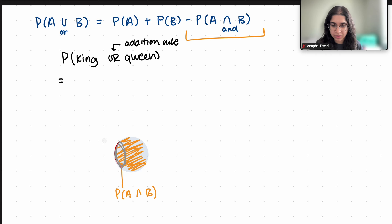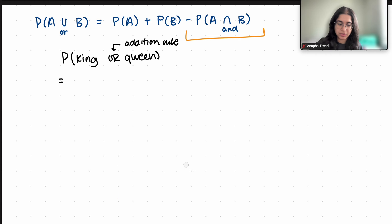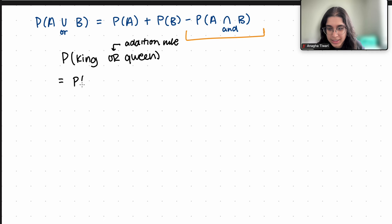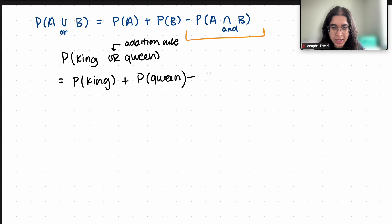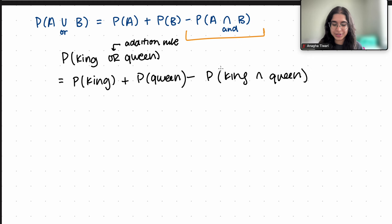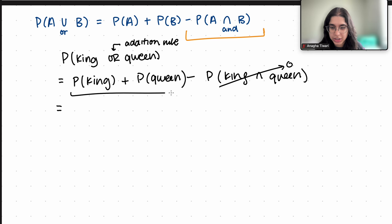Getting back to the question: it's P(king) + P(queen) − P(king and queen). Right away, we know that in a deck of cards there's no card that is both a king and a queen, so P(king and queen) = 0. It's essentially just P(king) + P(queen).